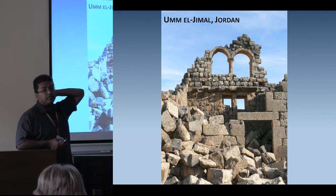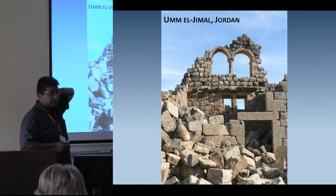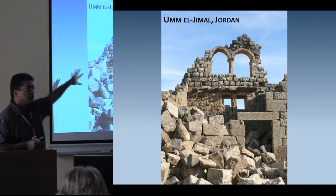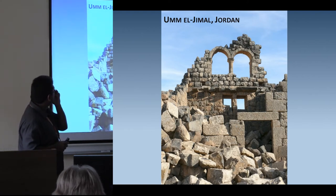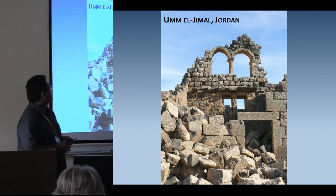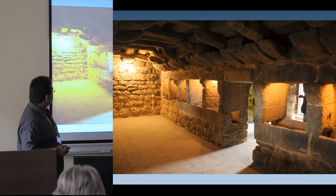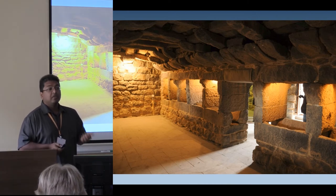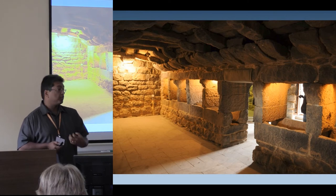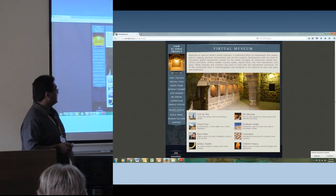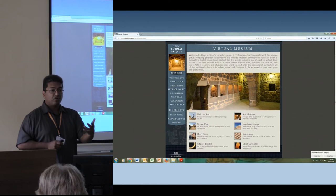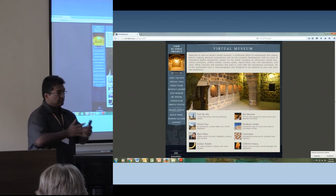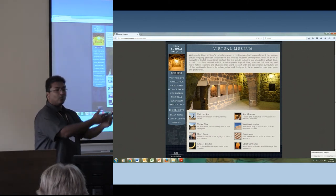Under the new plan, one of the first projects we supported was in Umm al-Jimal, Jordan. Umm al-Jimal is a site probably set up by people from Petra, lying between Petra and Damascus as part of that trade route. It dates from about the 1st to 8th century AD. What we supported here was a project creating a virtual museum, linked to a curriculum that is now part of the Jordanian school system — sort of maximum multiple impacts.